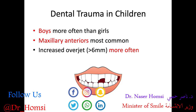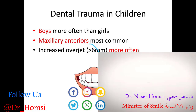Here are some high-yield facts to know for the board exam. Boys are more often impacted by dental trauma than girls. The maxillary anterior teeth are the most commonly involved. An increased overjet greater than 6 millimeters specifically has a higher risk of dental trauma, because the upper teeth are way out in front of the lower teeth, making them more vulnerable and more likely to be knocked into.